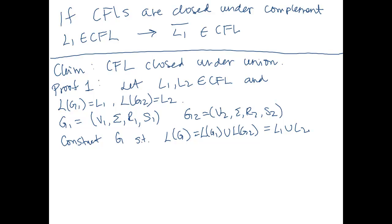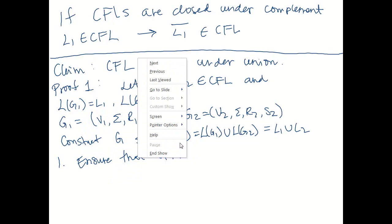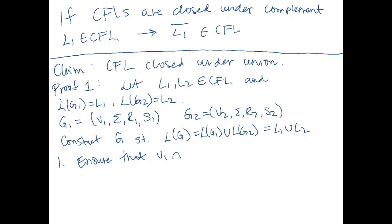Now we're going to construct G such that the language of G equals the language of G1 union the language of G2, which is the same as L1 union L2. For some technical reasons, the first thing we're going to do is ensure that V1 intersect V2 is the empty set.